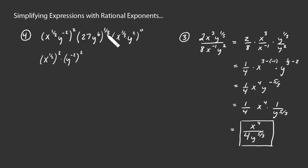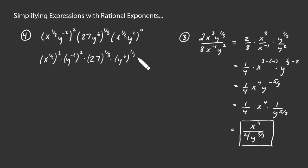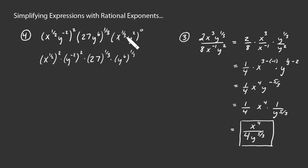For the second factor, we bring the 1 third distributed across both factors: 27 to the 1 third times y to the sixth to the 1 third. For the third factor, anything to the zero power — whether it be x to the 1 third, y squared, or the entire product — is simply 1. The one exception is that zero to the zero is indeterminate, but this whole thing is effectively a 1, so we don't need to write it.